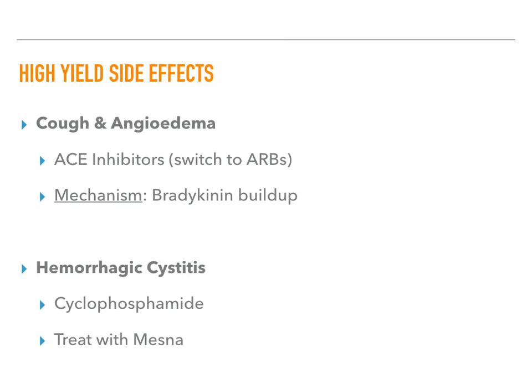Hemorrhagic cystitis is caused by cyclophosphamide and is treated with MESNA. The treatment of side effects for chemotherapeutic drugs like cyclophosphamide and doxorubicin is really high yield — know these associations. Cyclophosphamide causes hemorrhagic cystitis, treated with MESNA. Doxorubicin causes dilated cardiomyopathy, treated with dexrazoxane.